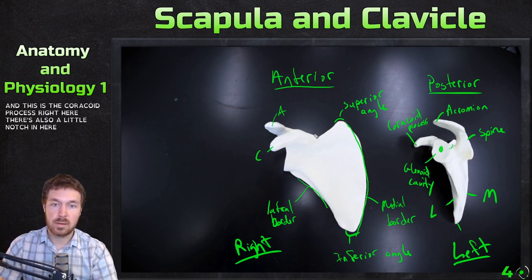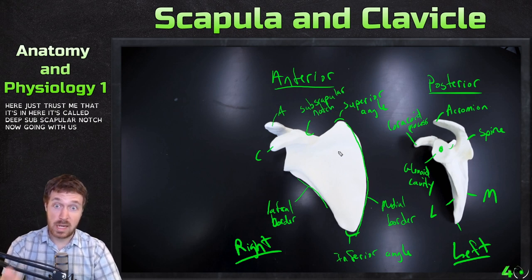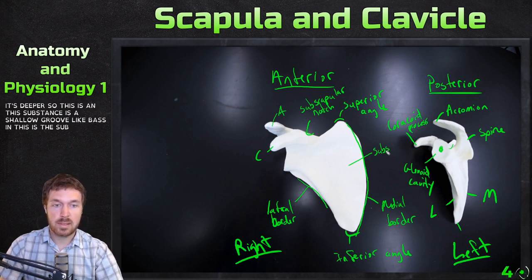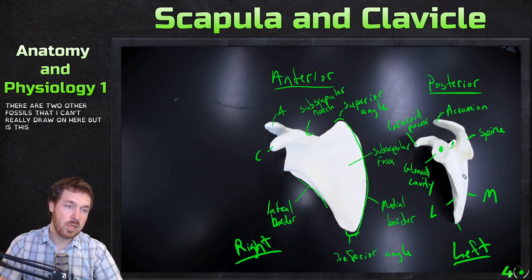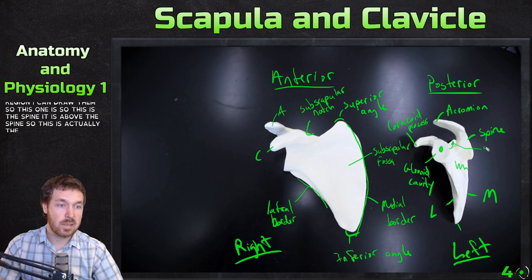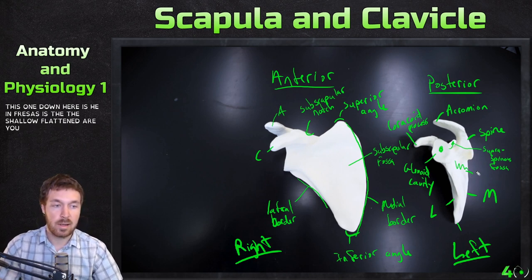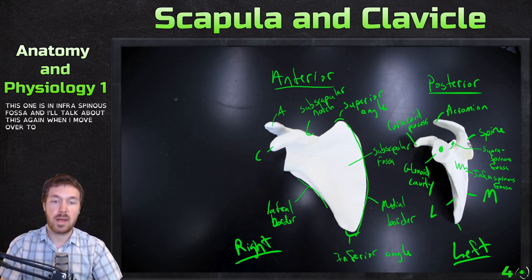You can see the acromion and the coracoid process here. There's also a little notch in here called the subscapular notch. The anterior aspect of the scapula is the subscapular side — it has a shallow groove-like base called the subscapular fossa. There are two other fossae on the posterior side: above the spine is the supraspinous fossa, and below the spine is the infraspinous fossa.